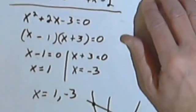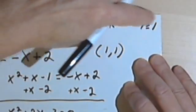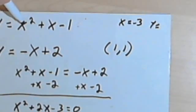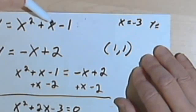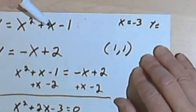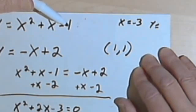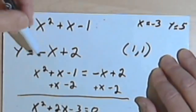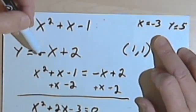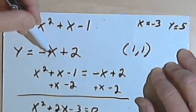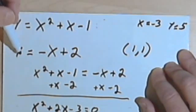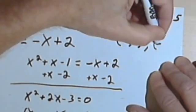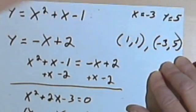Now the other solution I had was x equals negative 3. So let's see what happens when x is negative 3. When x is negative 3, negative 3 squared is 9, plus negative 3, which is like saying 9 minus 3 is 6, minus 1 is 5. So y should equal 5. Let's check the second equation to make sure that it works for both of them. Negative x. Well, if x is negative 3, negative negative 3 is positive 3, plus 2 is 5. So once again, y equals 5. So I've got two solutions, 1, 1 and negative 3, comma 5.